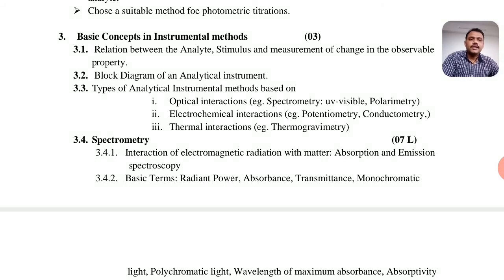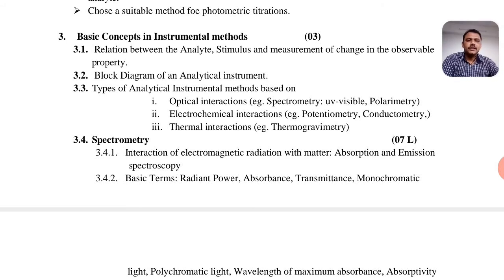Topic 3.1 covers the relation between the analyte, the stimulus, and the measurement of the change in the observable property. The block diagram of analytical instruments is discussed. For example, optical interactions include spectrometry, visible spectrometry, and polarimetry. Electrochemical interactions include potentiometry and conductimetry. Thermal interactions include thermogravimetry. These are applicable in various types of industries.